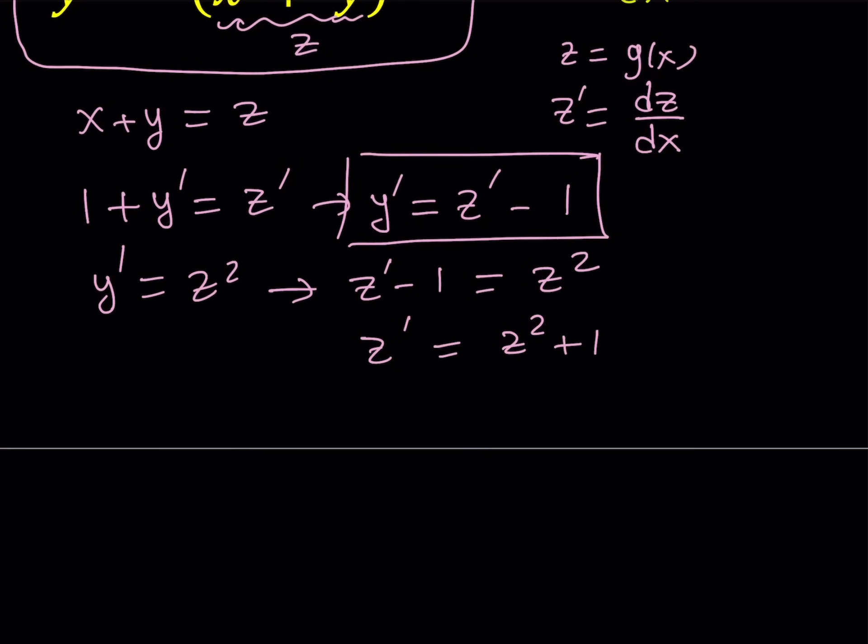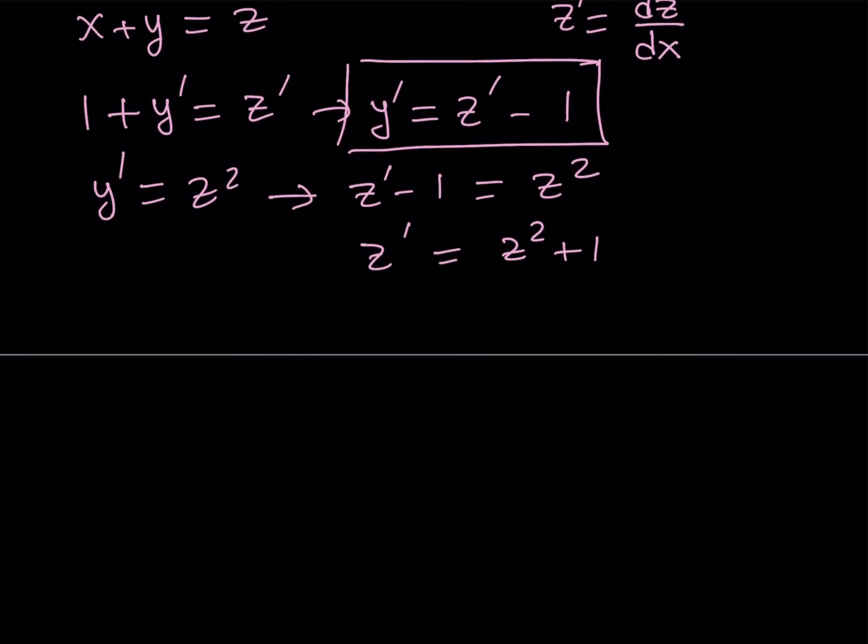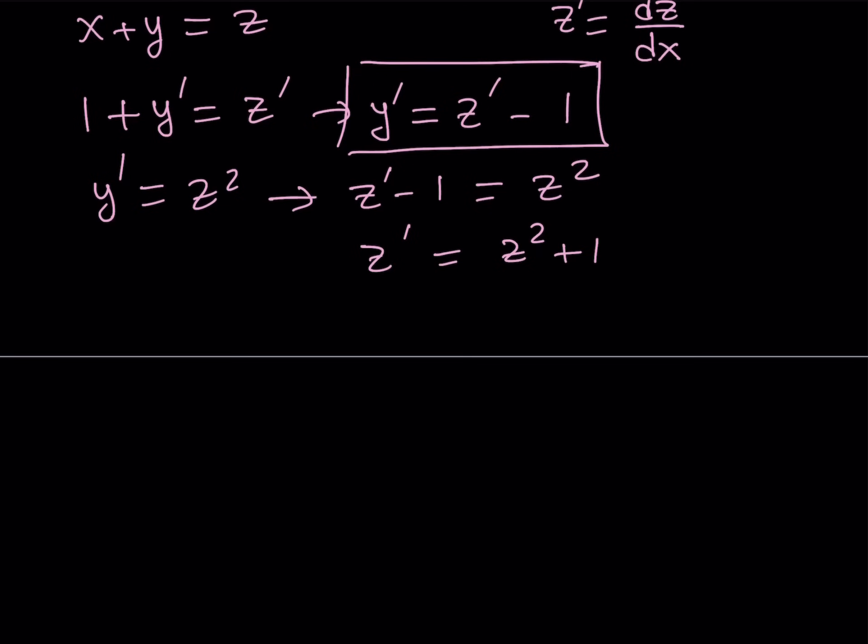Now obviously, this equation is a lot easier to solve than the first one, because in the first one, x and y are mixed together, and it kind of creates some problems. But here, we only have z, so in a single variable, we can solve this differential equation, because it's separable now.